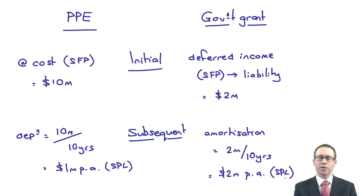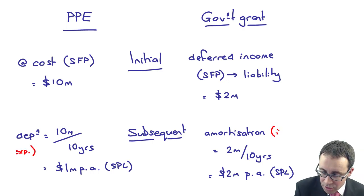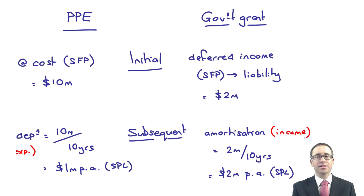Again, that's on the statement of profit or loss. You can distinguish that the depreciation is an expense. And the amortisation of your government grant is income.